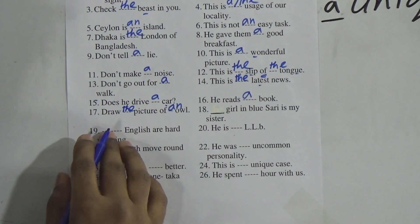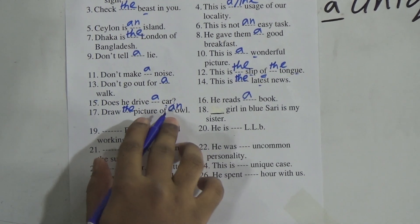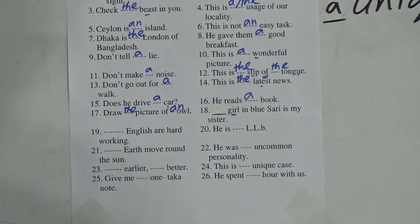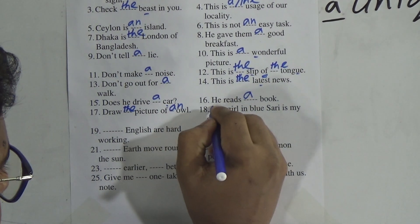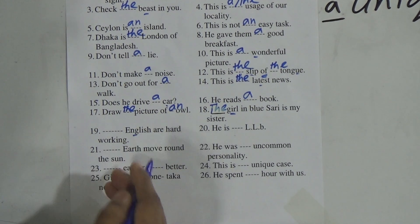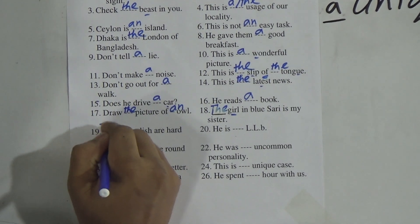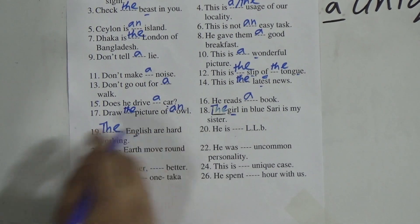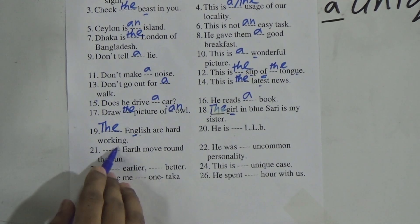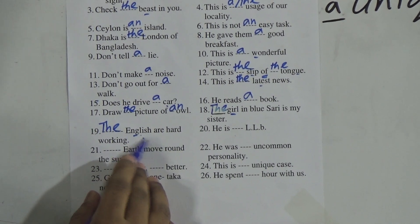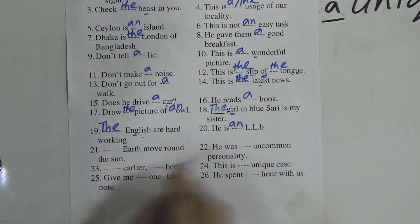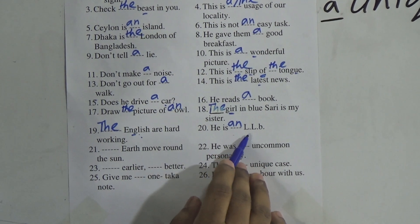The girl in the blue shirt is my sister — the girl is identified and definite, so we use 'the'. The English are hard working — here 'English' is not a subject but a nation, and before a nation we always use 'the'. The English are hard working.